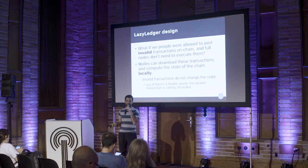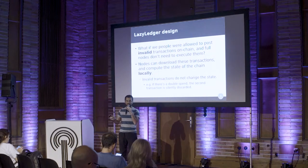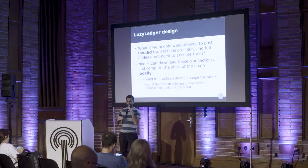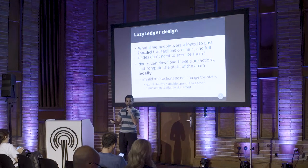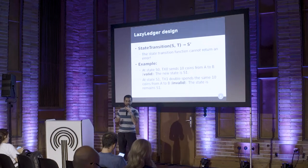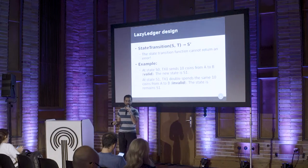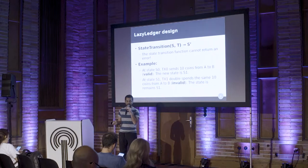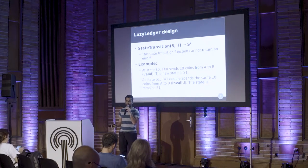The way that you prevent bad behavior is that the nodes download all of the transactions and compute the state of the chain locally. So instead of every single node executing the transactions, or instead of miners only allowing valid transactions in the block — you allow invalid transactions in the block. That eliminates the need for nodes to validate transactions in that block, because the state of the blockchain and balances are executed locally by the nodes downloading these transactions.